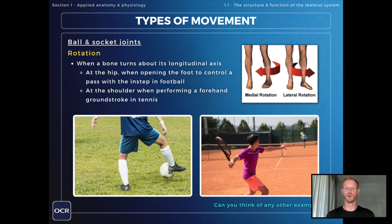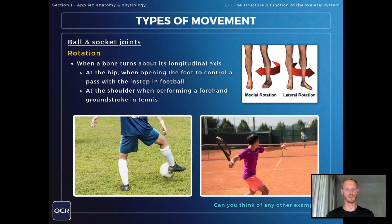Rotation can also be seen at the shoulder when performing a forehand ground stroke in tennis, particularly if lots of topspin is being applied — that would be an example of medial rotation. Note that you don't need to know the differences between medial and lateral rotation.